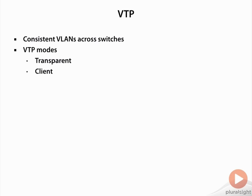A client is a machine that simply receives VLAN information from a server. The third mode is server, which is the default mode for VTP. In server mode, you can create, modify, and delete VLANs. Client switches cannot create, modify, or delete VLANs — they receive that information from the server. Transparent mode switches can create, modify, and delete local VLANs, but they don't update the rest of the VTP domain.